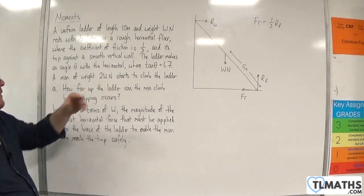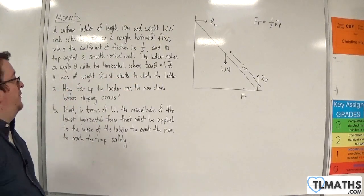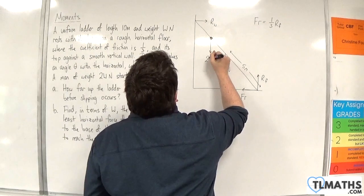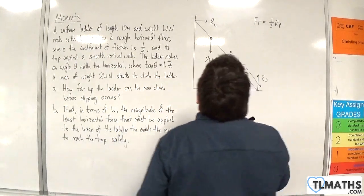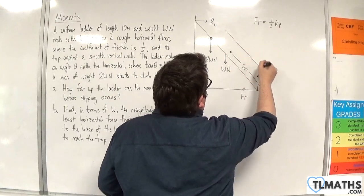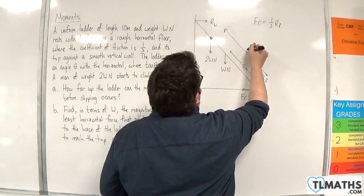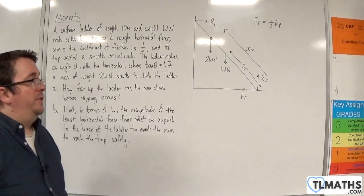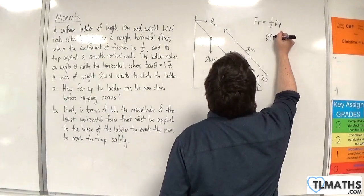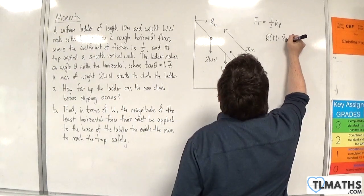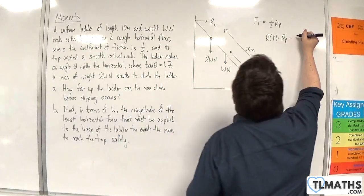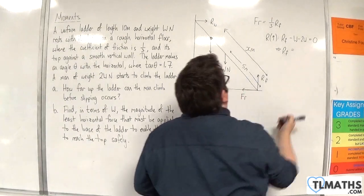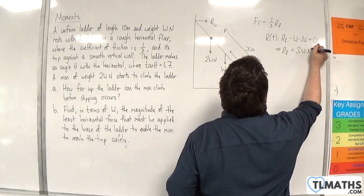We know that tan of theta is 1.7. A man of weight 2W Newtons starts to climb the ladder, so let's position him on the ladder. He has a weight of 2W Newtons, and we'll call the distance from the base X metres. We know the coefficient of friction is one third, so friction equals one third times R_F. Resolving upwards: R_F minus W minus 2W equals zero, so the normal reaction force at the floor is 3W Newtons.